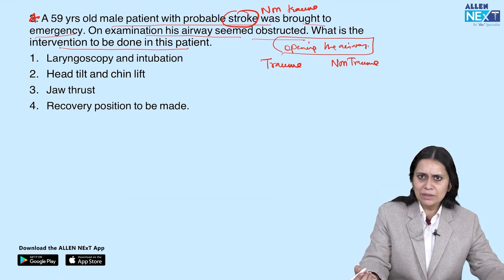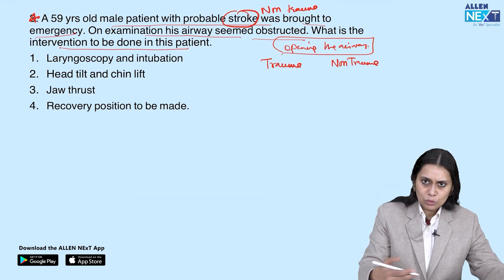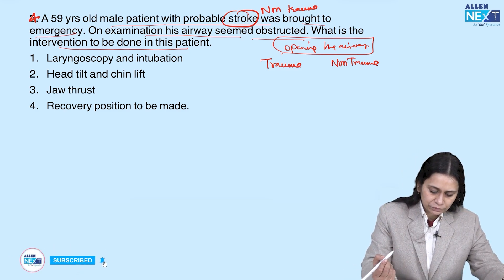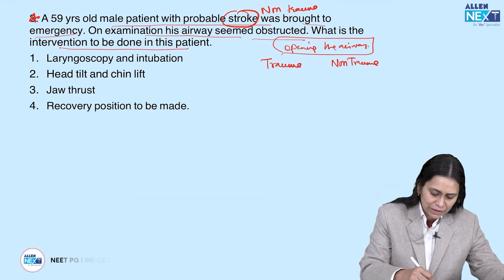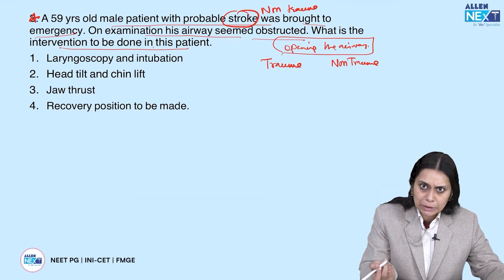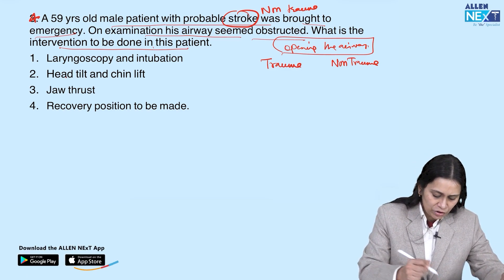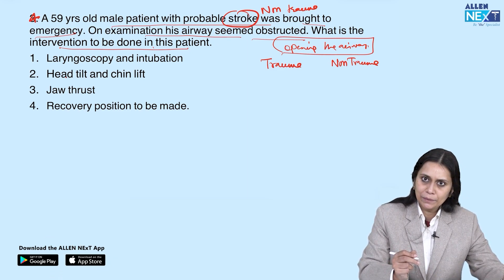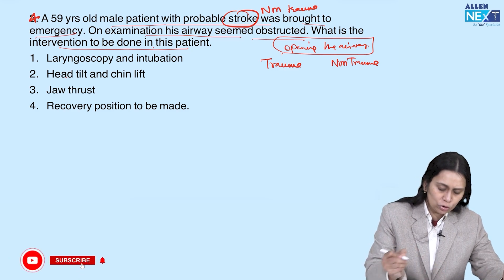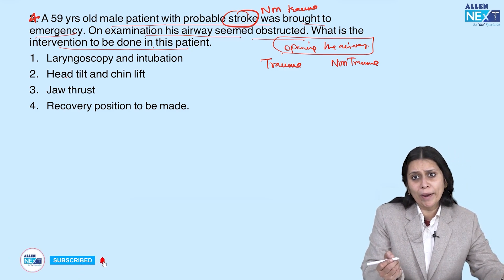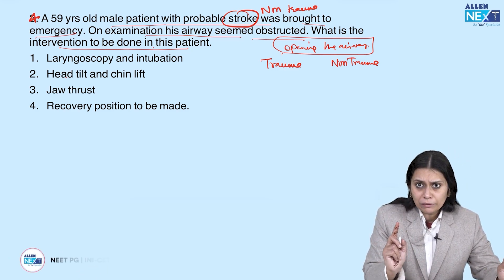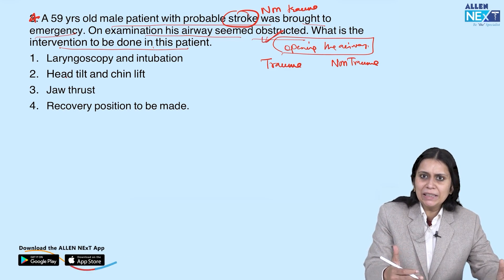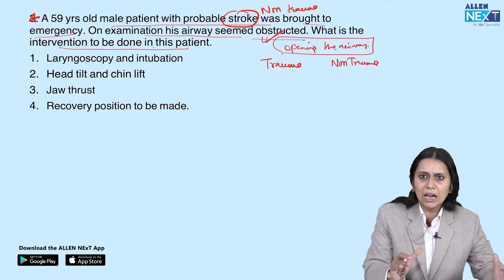There are two manoeuvres which open the airway. The options are: laryngoscopy and intubation, head tilt chin lift, jaw thrust, and recovery position. The first immediate intervention for this non-trauma patient with an obstructed airway is head tilt chin lift. Laryngoscopy and intubation may be required but that is not the first thing we do — immediately we must do some manoeuvre to make the airway unobstructed.